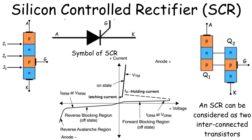Equivalent Model of SCR as Two Transistors. On the right side, we see another representation of the SCR. This time, it's depicted as two interconnected transistors, Q1 and Q2. This configuration helps to understand how the SCR works internally. When a small gate current is applied, it turns on Q2, which then triggers Q1. Together, they create a positive feedback loop, keeping each other on and allowing current to flow between the anode and cathode.